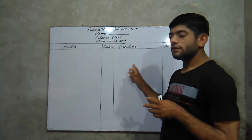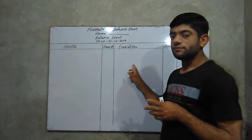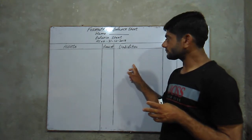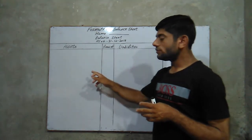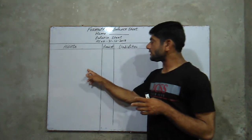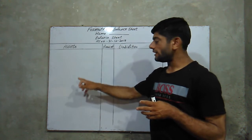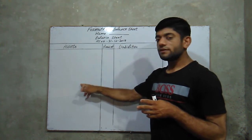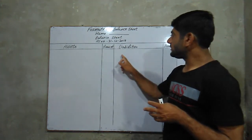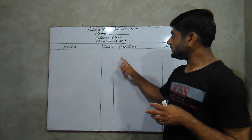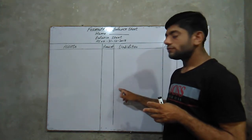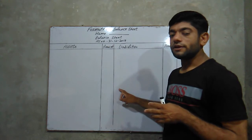For the format of the balance sheet, one side is assets and the other side is liabilities. Here we record all current assets and fixed assets. On the other side we record current liabilities and long-term liabilities.